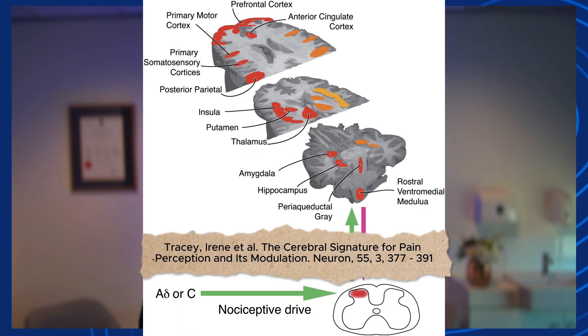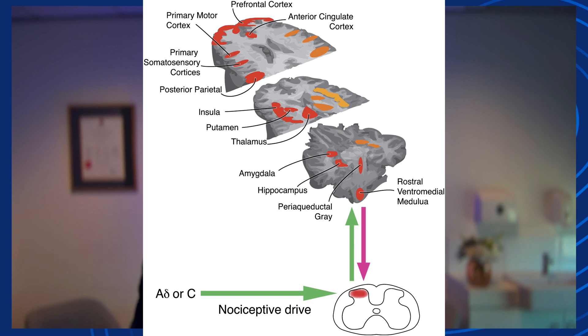Something has happened to this nervous system to trigger pain, and this pain is what we call a neuropathic pain condition. What's on the screen now is a diagrammatic representation of the somatosensory nervous system and how complex it is.